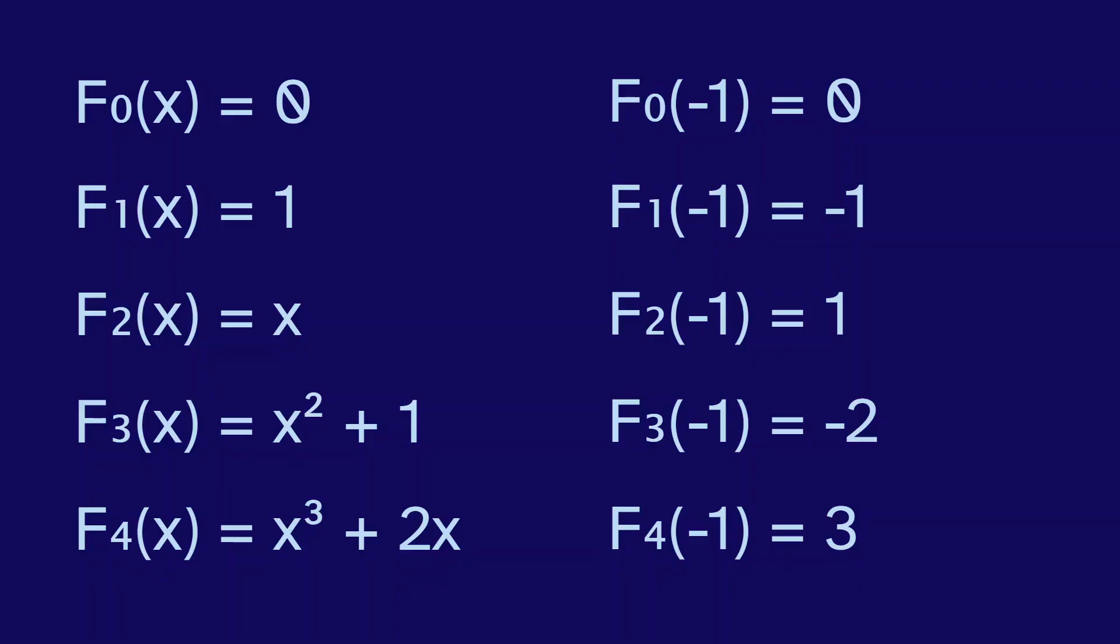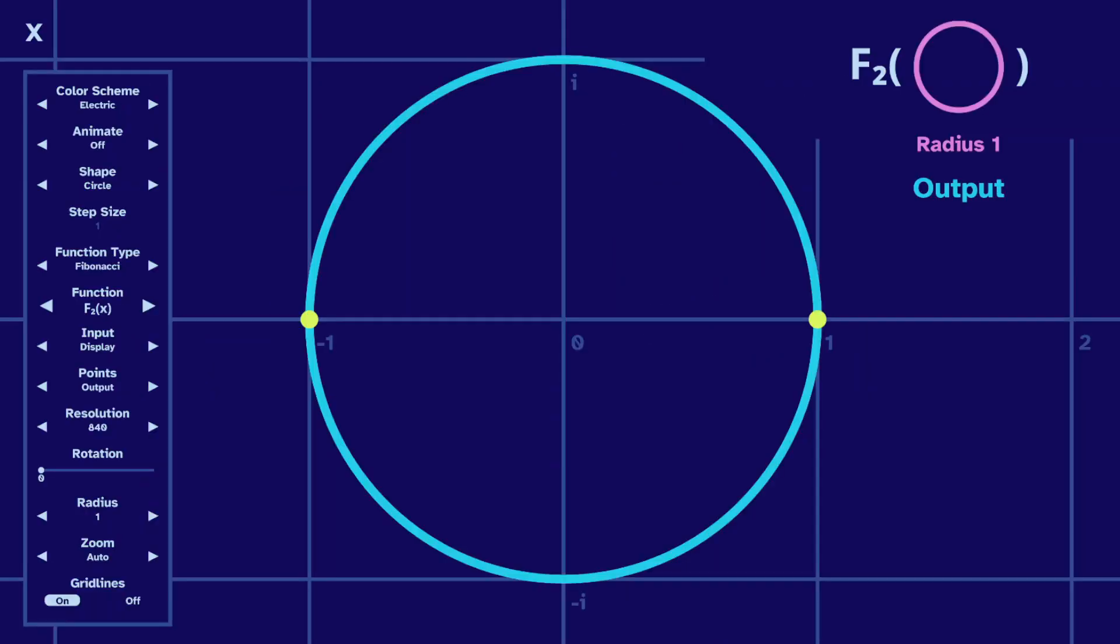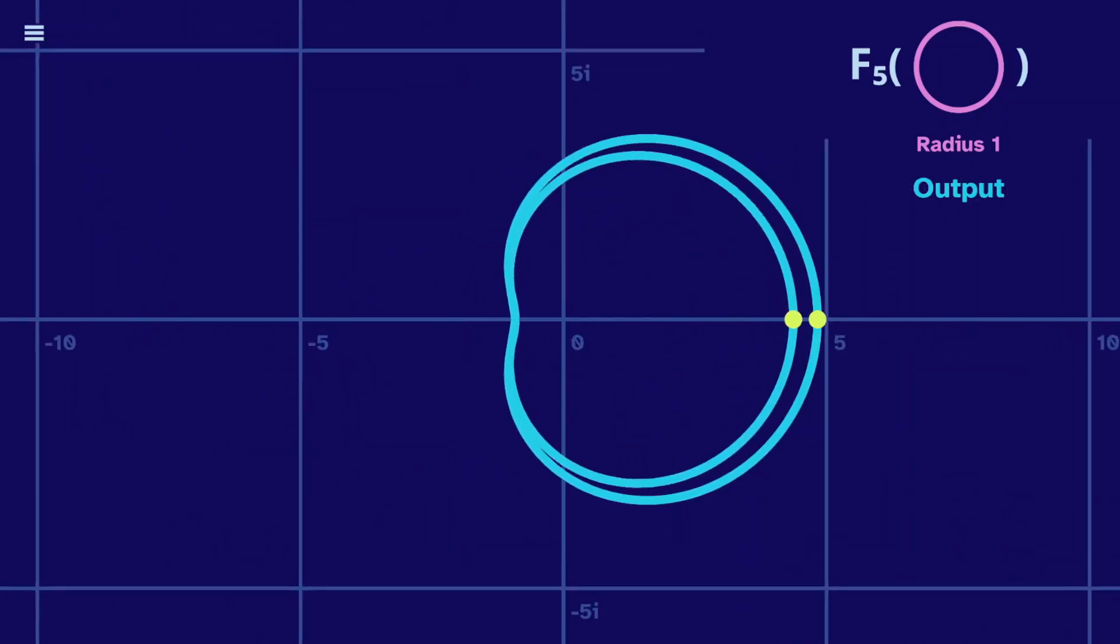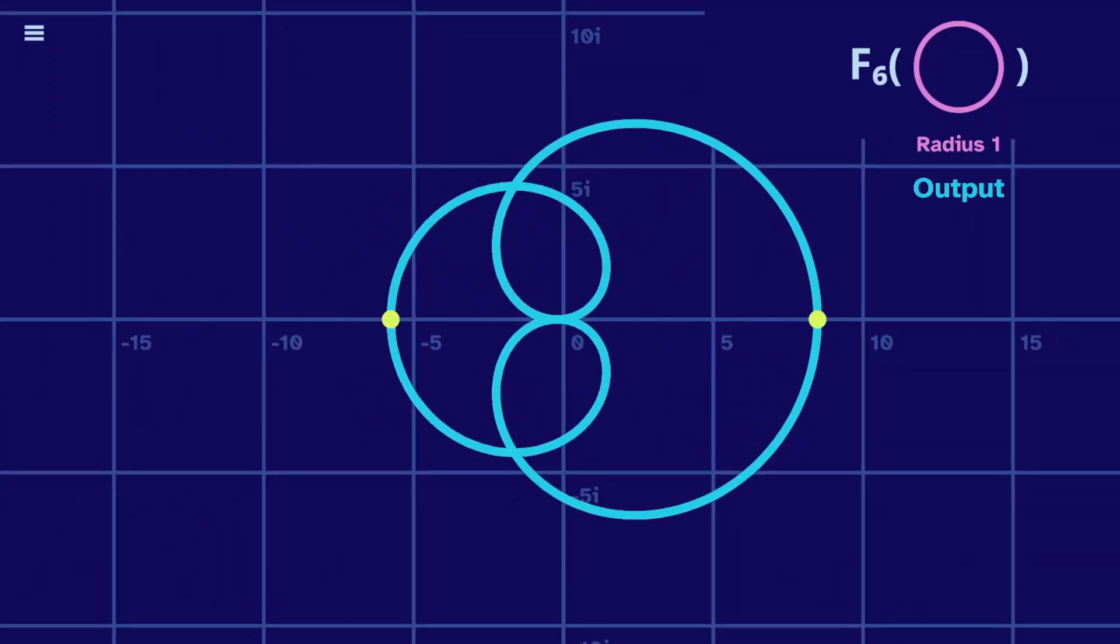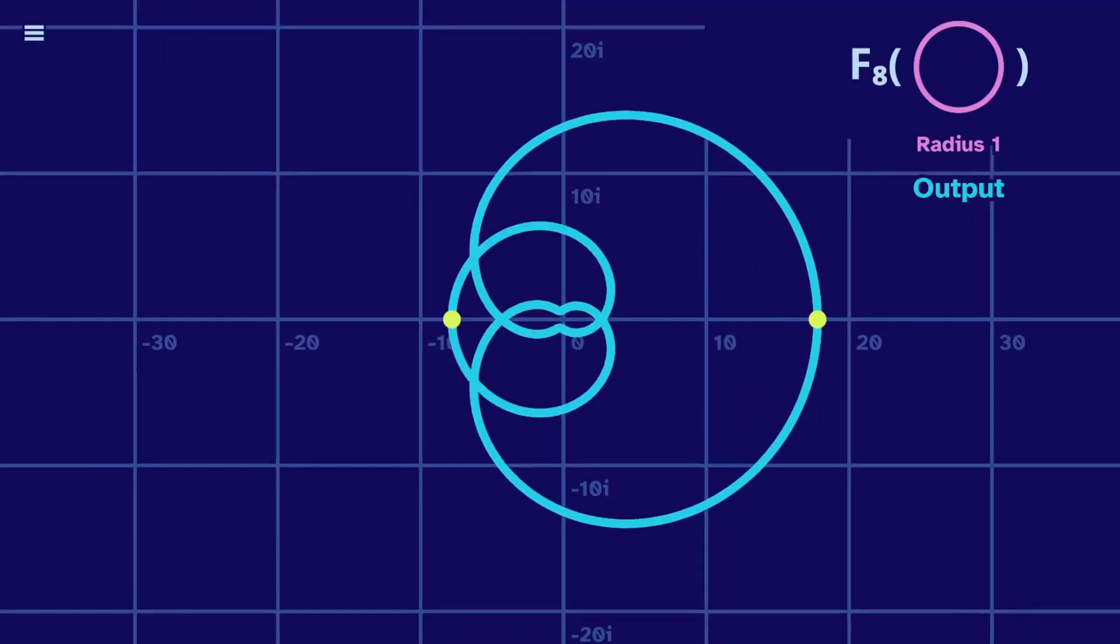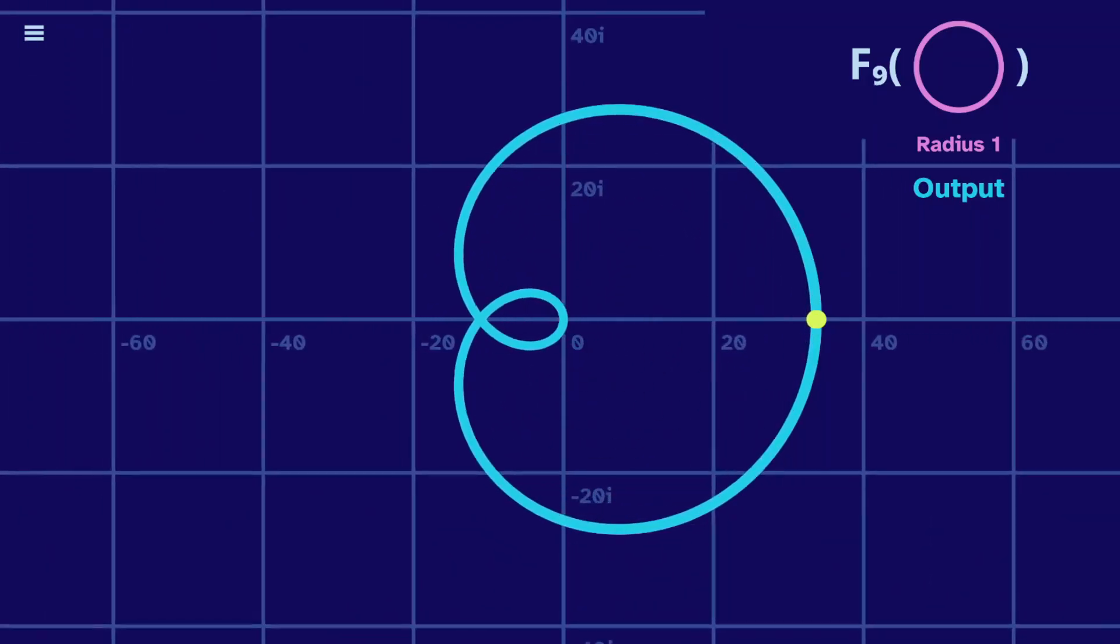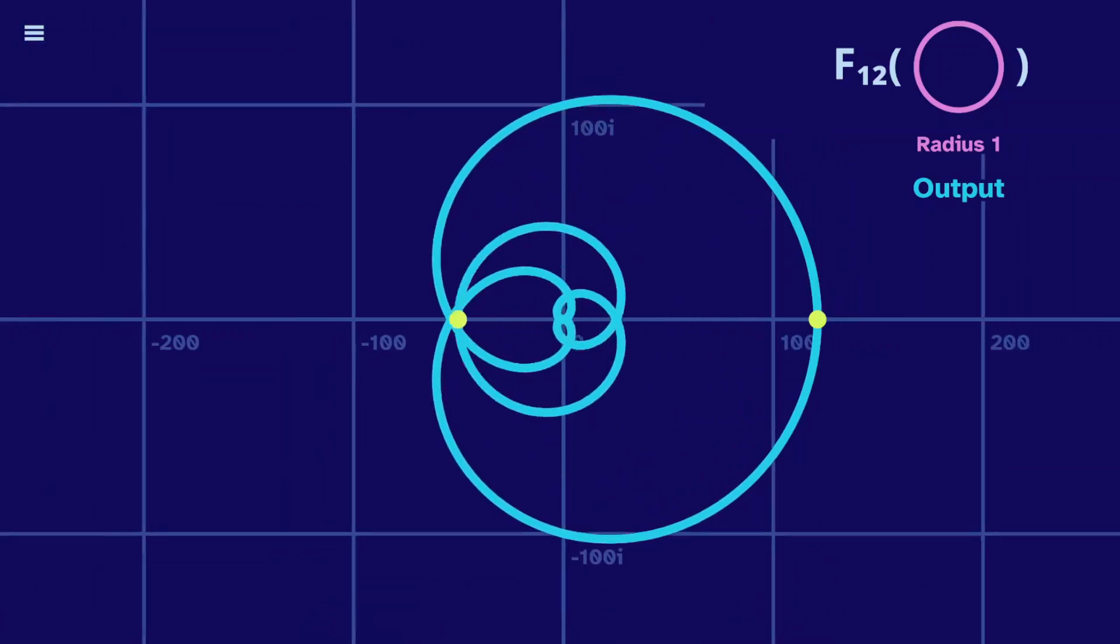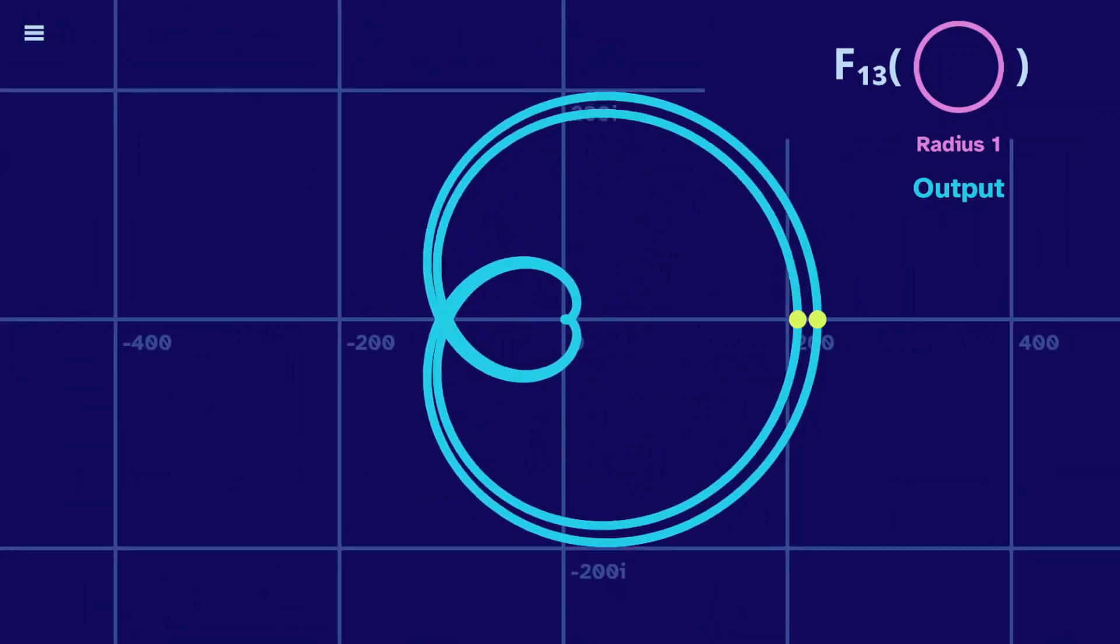To visualize this, we'll take a circle as an input to the second Fibonacci polynomial, then go to the third, and continue. The two points are the outputs of 1 and negative 1. 1 grows larger and larger, while negative 1 jumps back and forth. And this causes a repeating output for the rest of the graph.